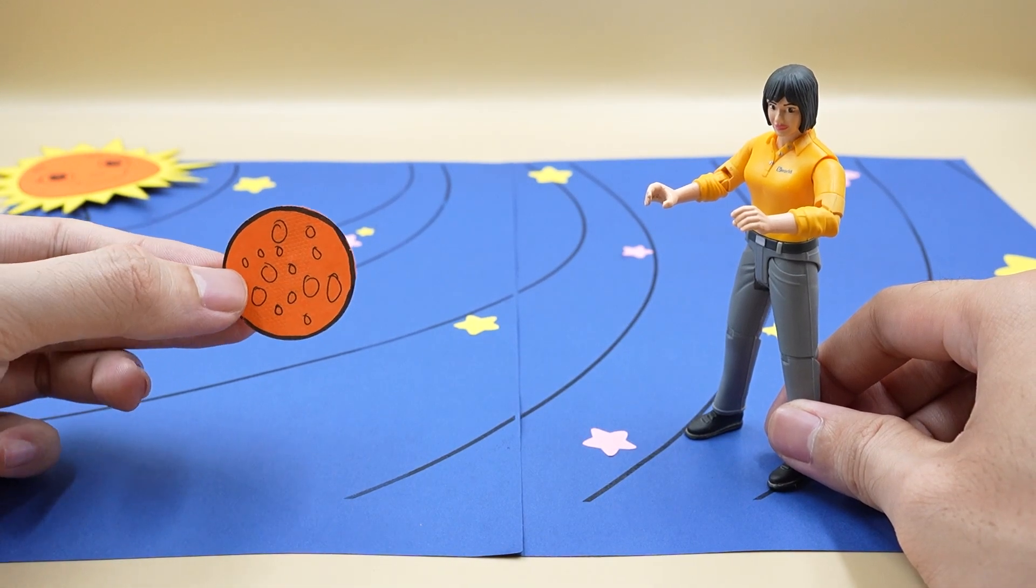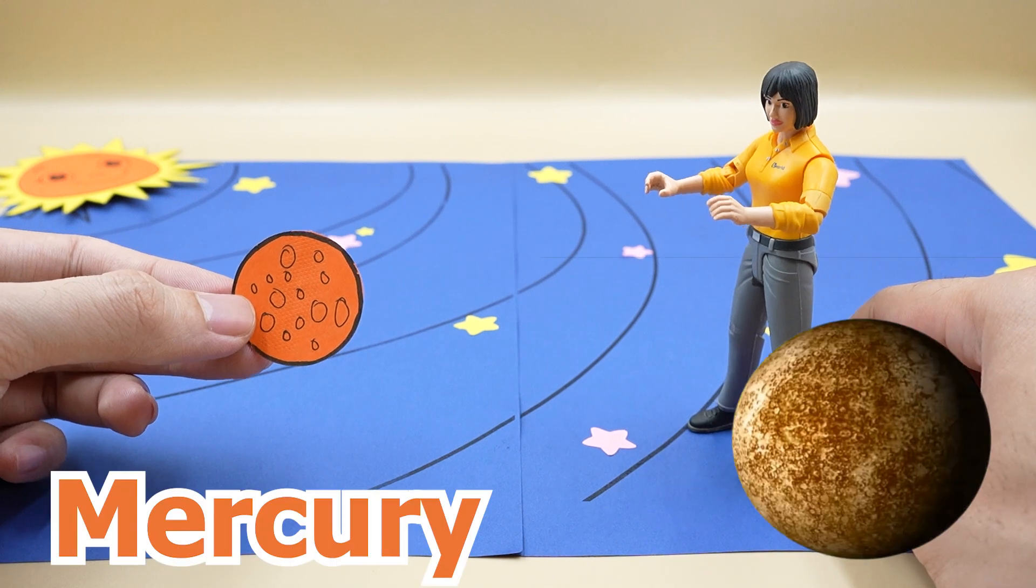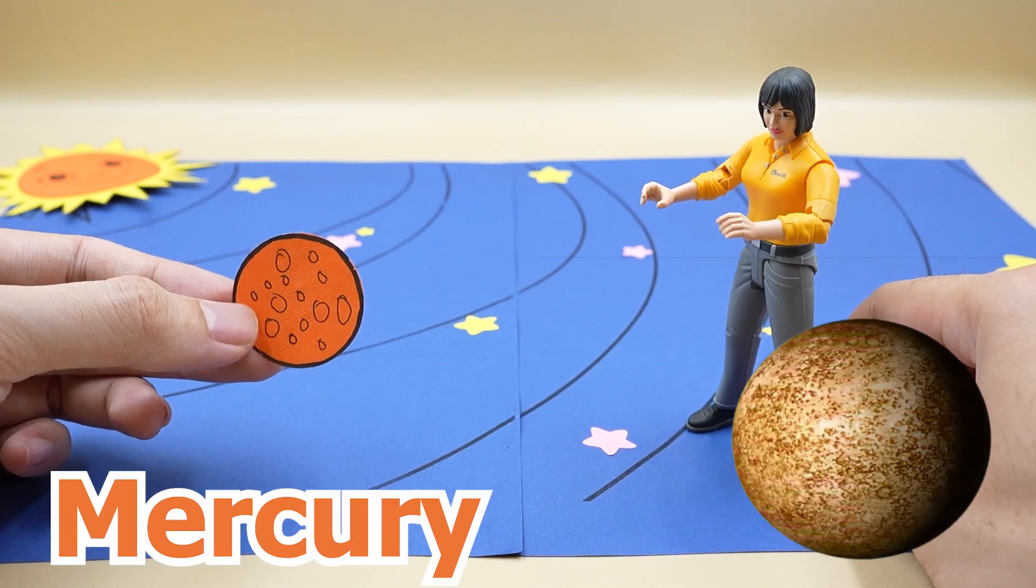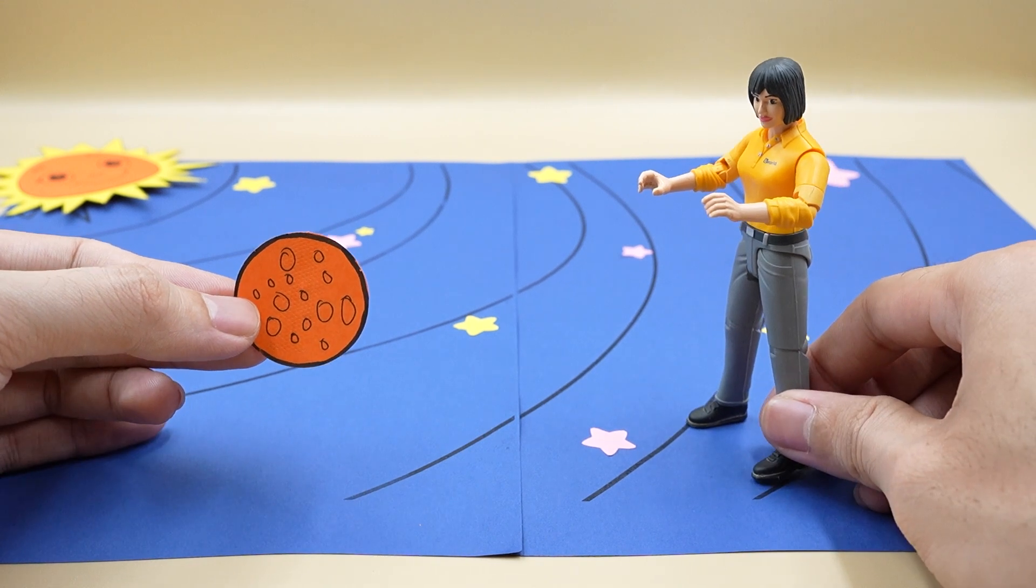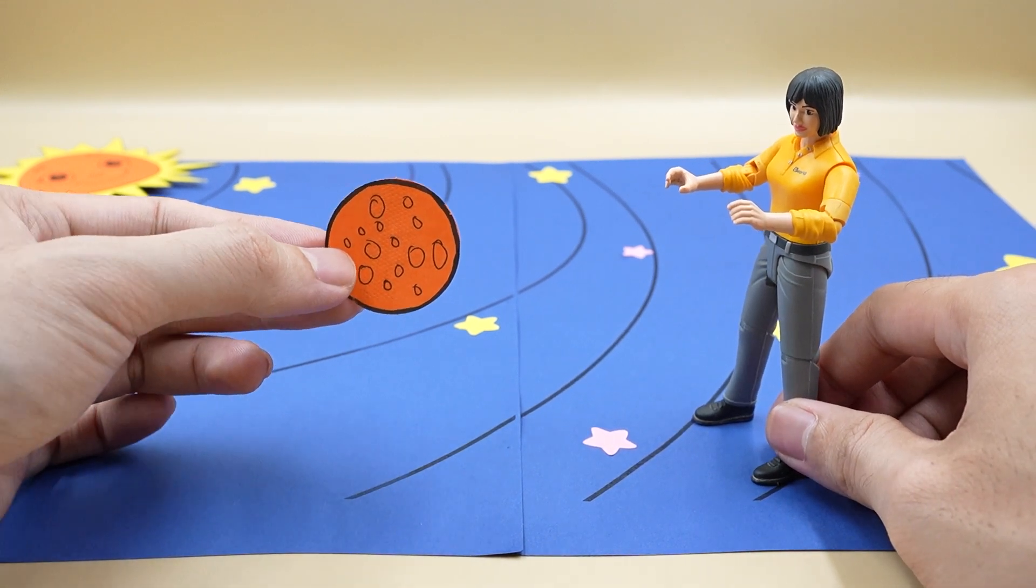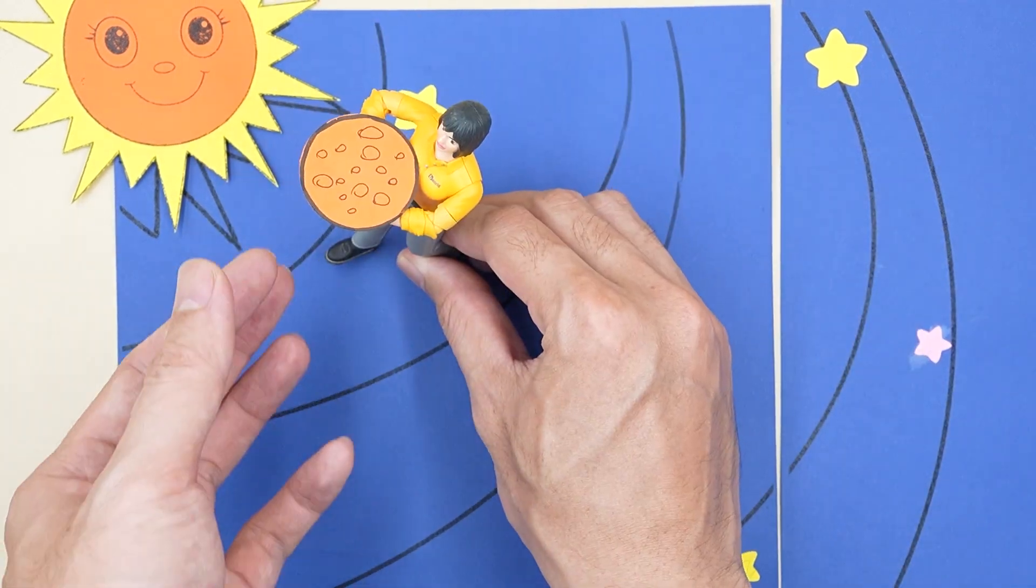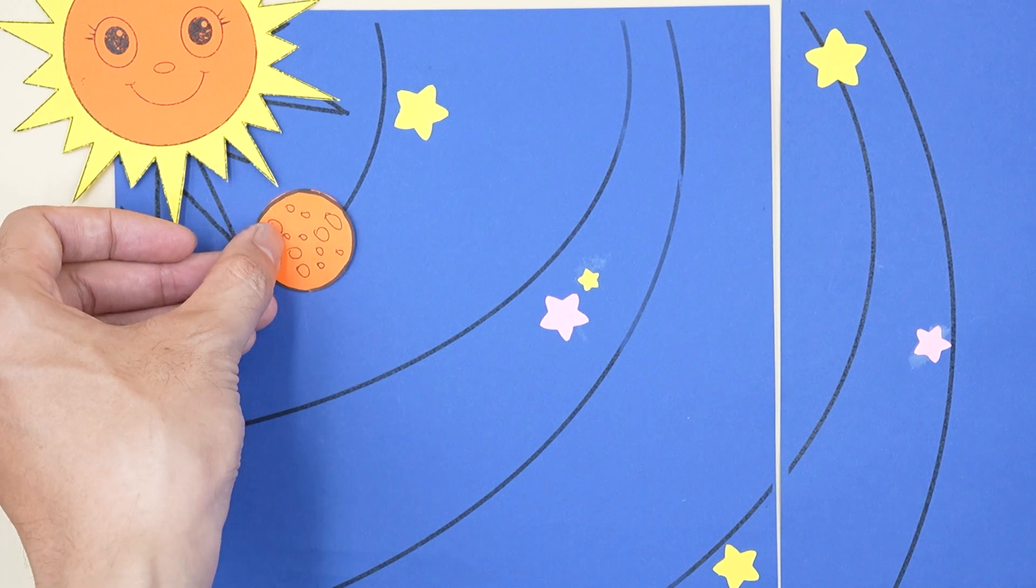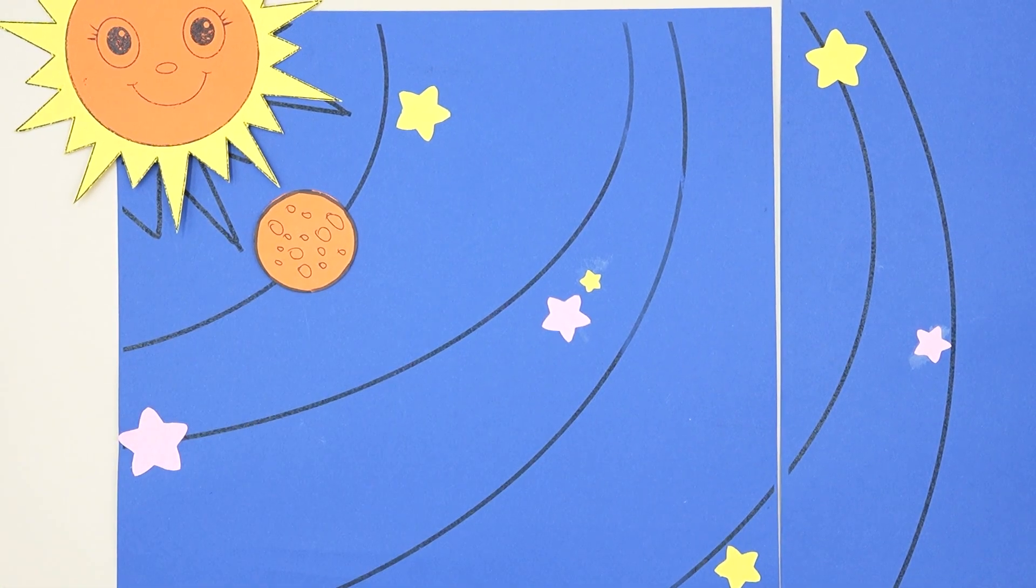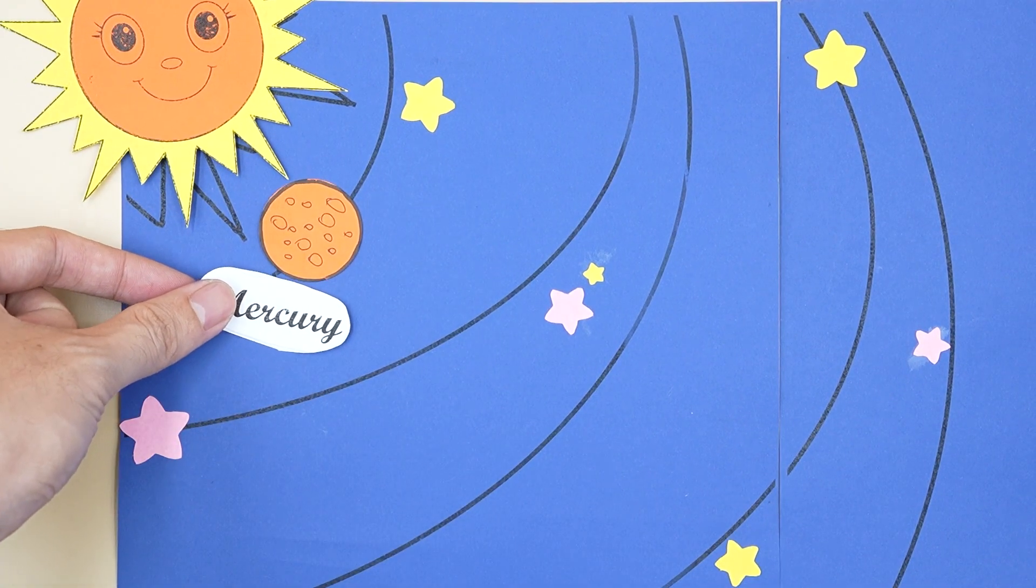First, do you know what this star is called? This is a star called Mercury. It is the closest star to the sun and the smallest star in the solar system. I will help you put this star into the picture of the solar system. Mercury will be placed here, a position close to the sun. I put the word Mercury here.